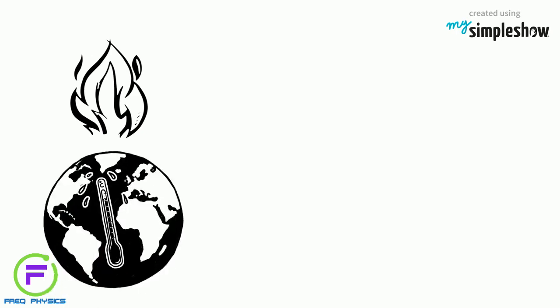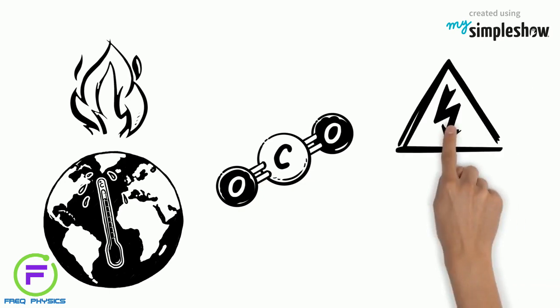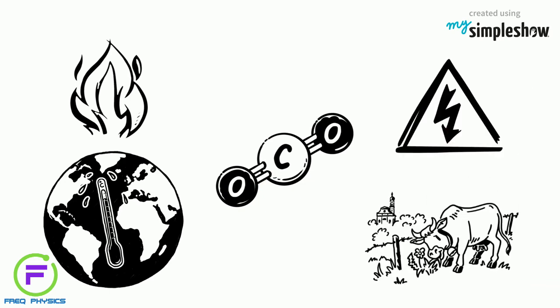Greenhouse gases trap heat in the atmosphere and make the planet hotter. In fact, they are formed in many ways. Producing electricity and raising cattle also adds to the high levels of greenhouse gases in the atmosphere.